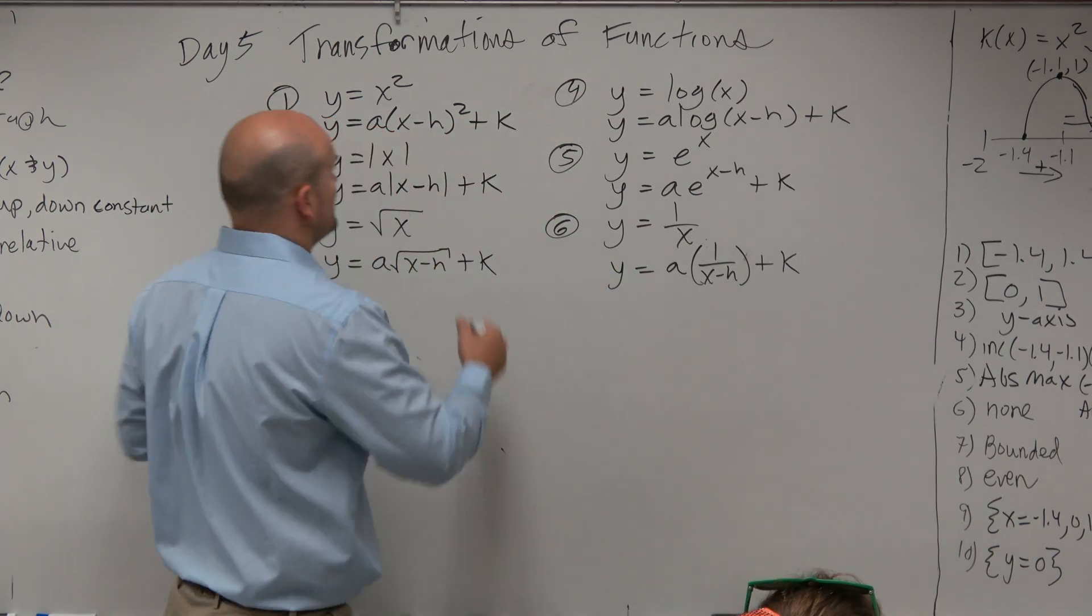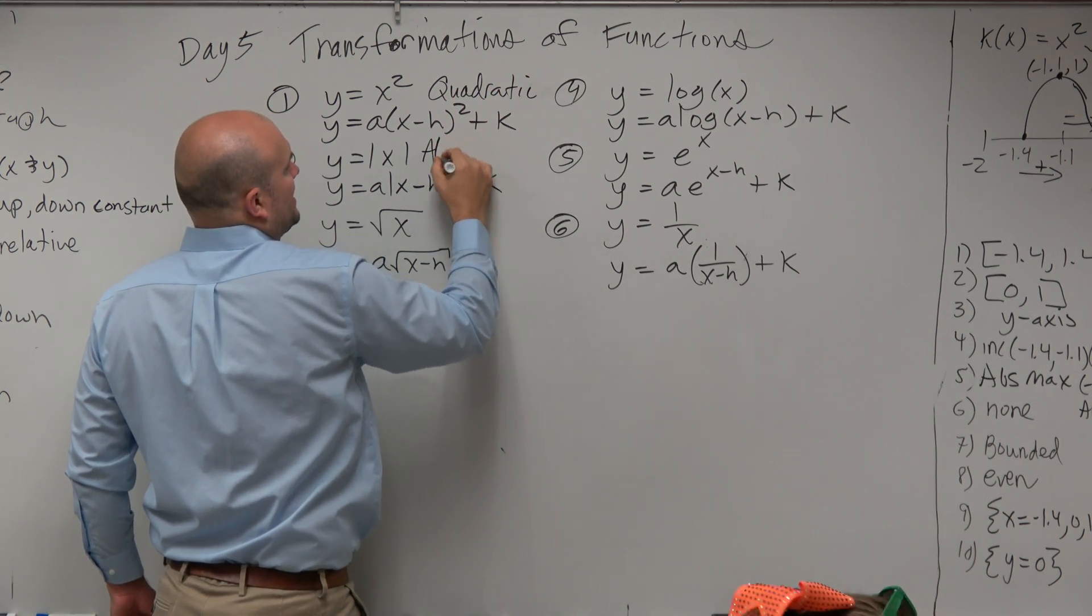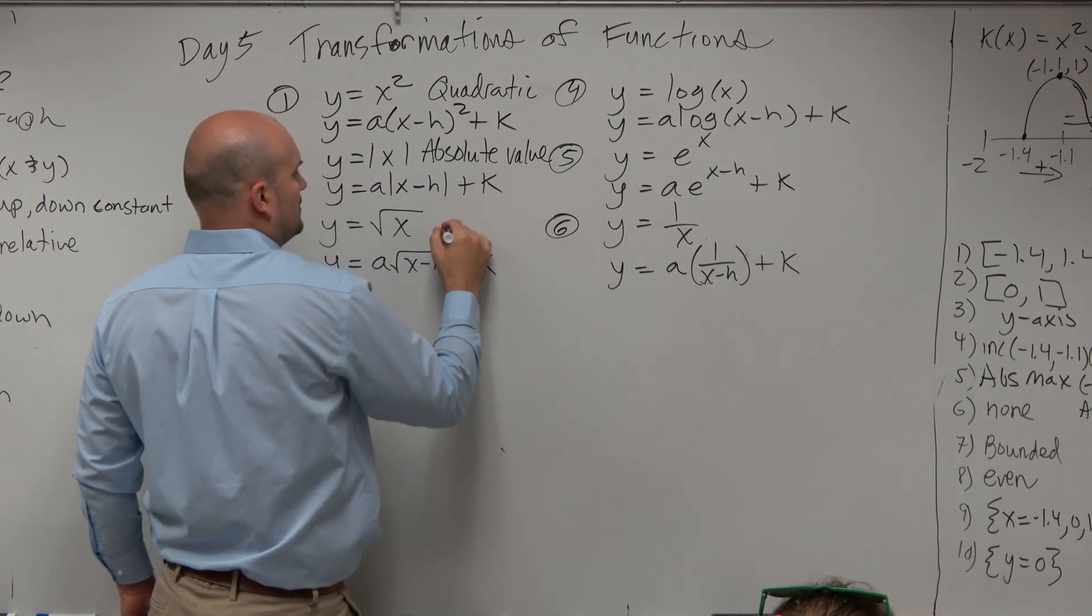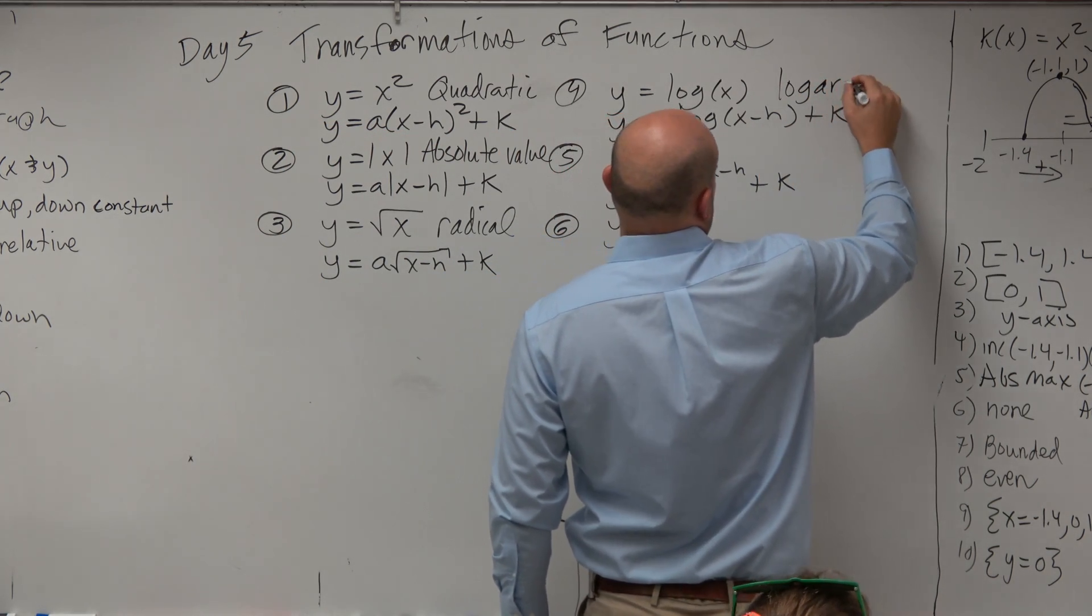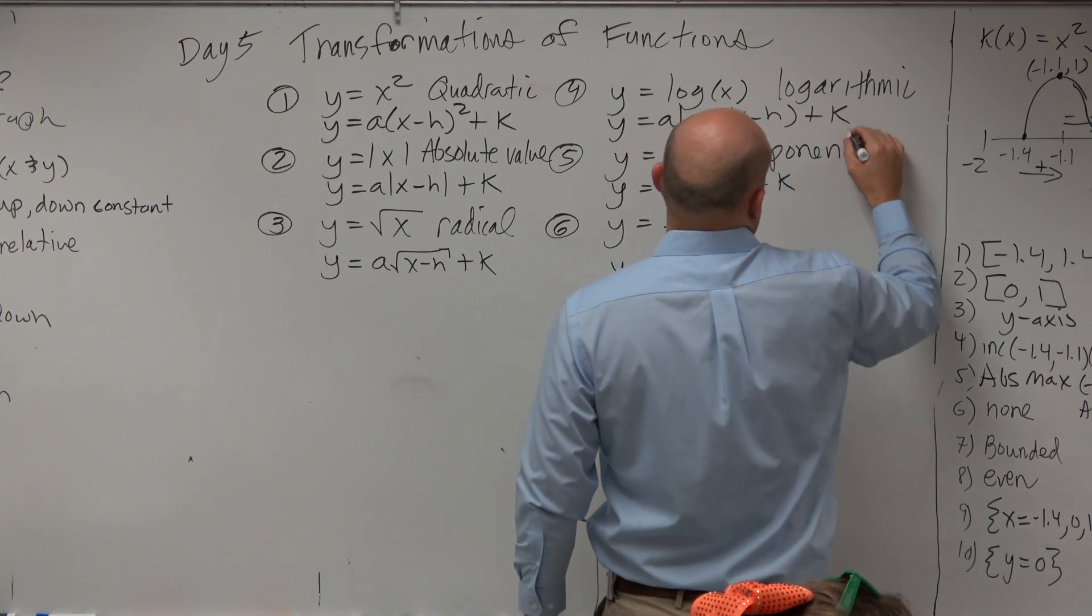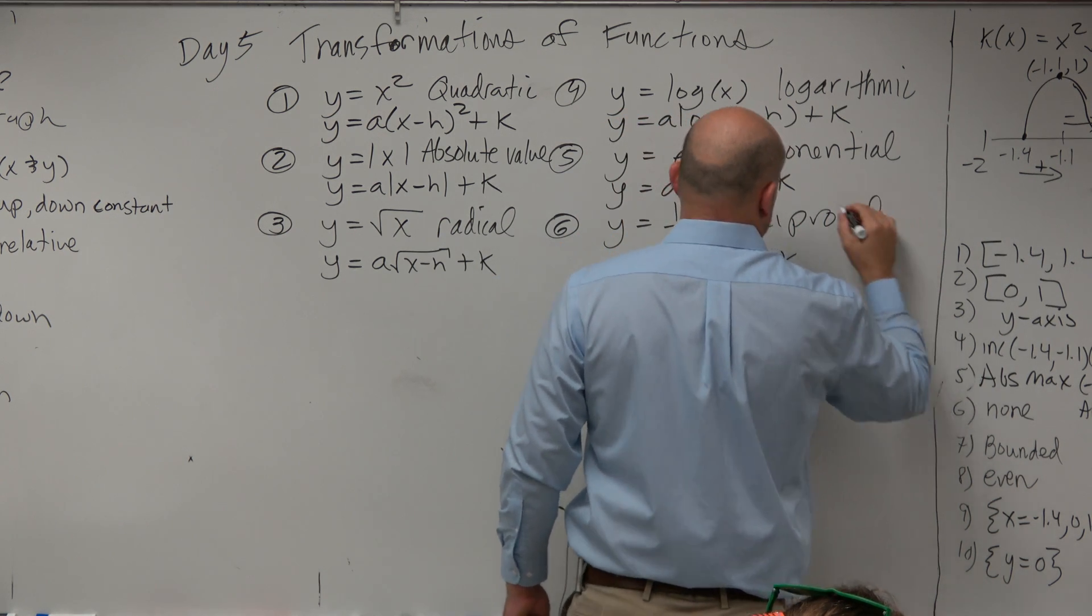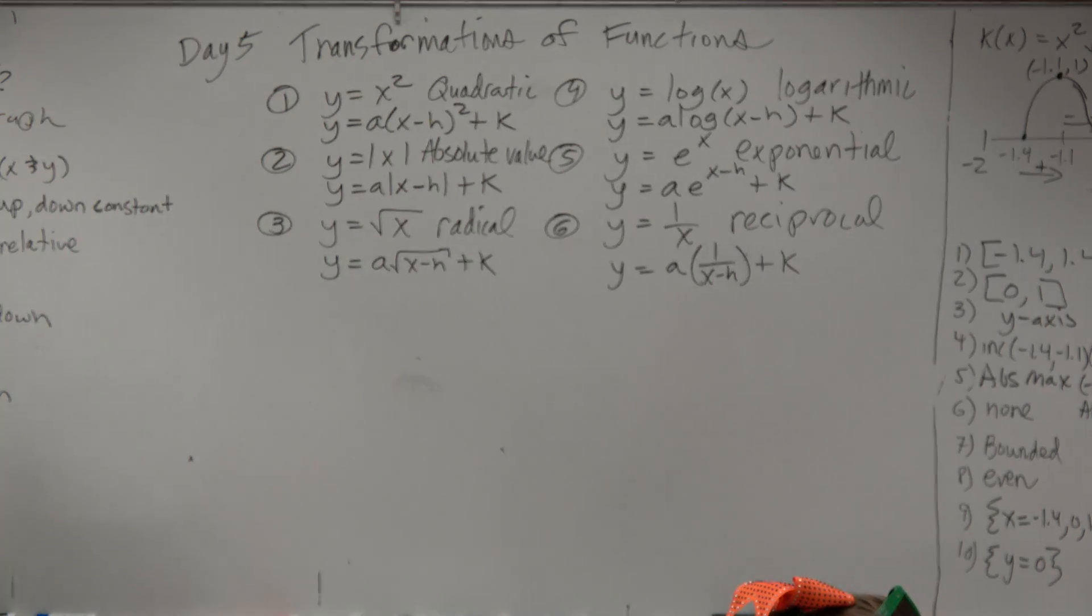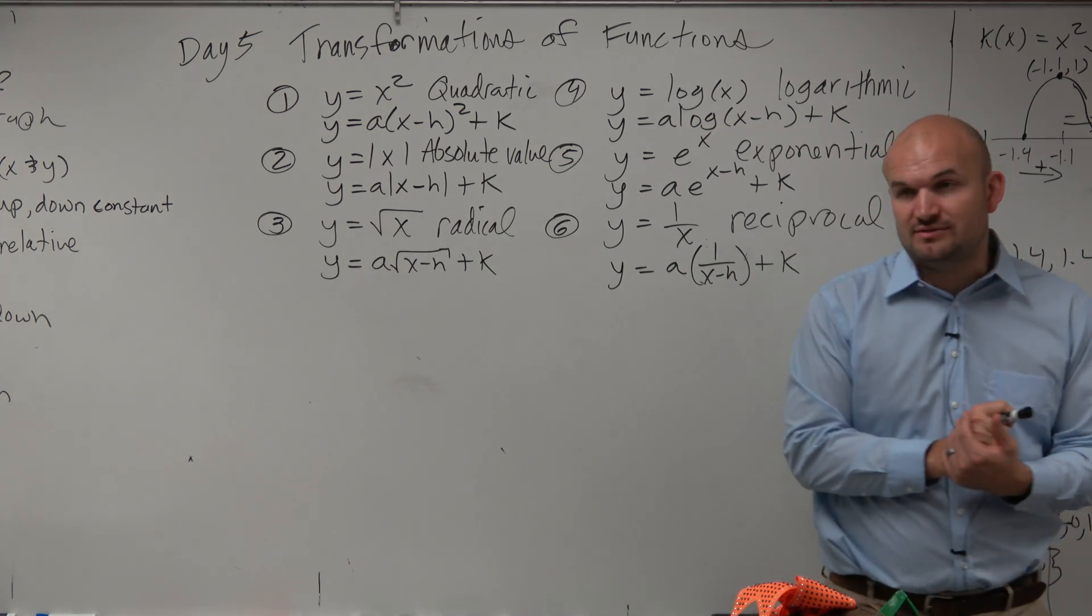And you guys are very familiar with it from the quadratic. I'm going to continue using h and k, you might have used different values, like different letters, but just remember a, h, and k just represent real numbers. And just a reminder, I'll just go back there, let's, I'll just label these. This is a quadratic. This is absolute value. This is a radical. This is logarithmic. This is exponential. This is called the reciprocal.